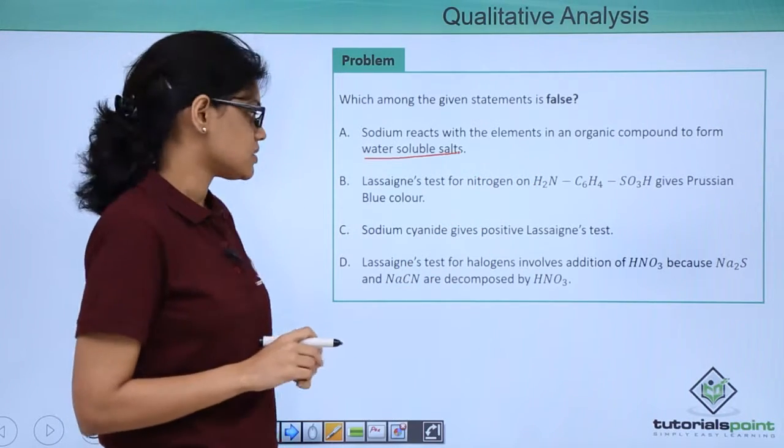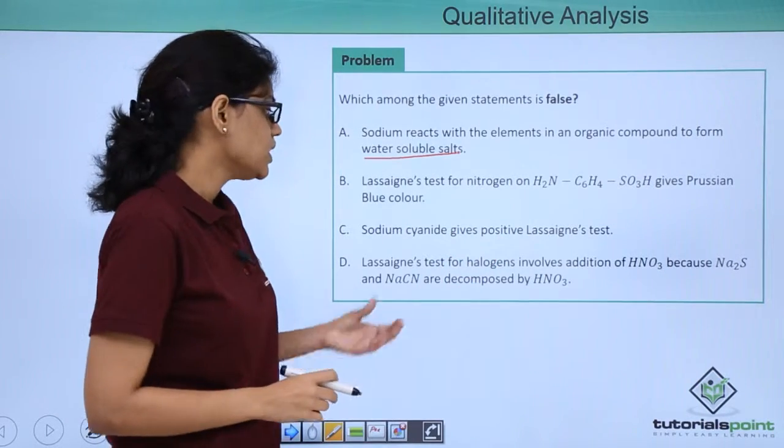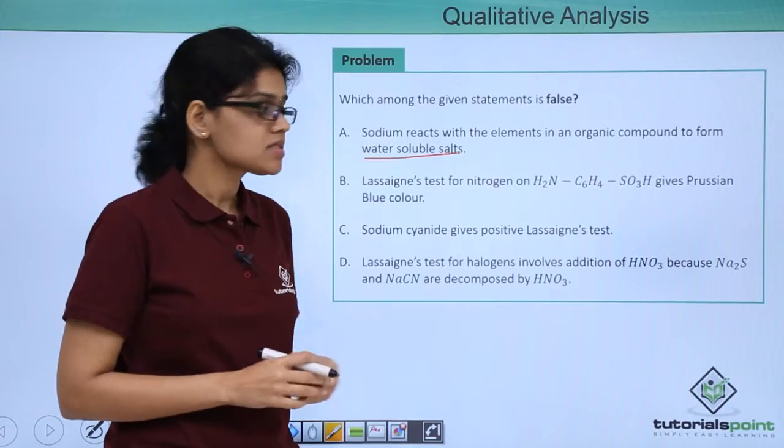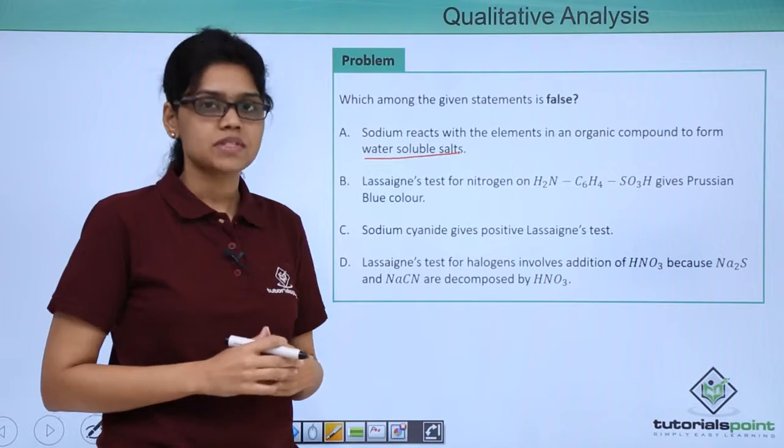Option C states that sodium cyanide gives positive Lassaigne's test, and option D states that for the Lassaigne's test for halogens HNO3 is added because it decomposes Na2S and sodium cyanide.